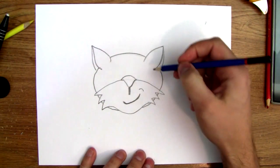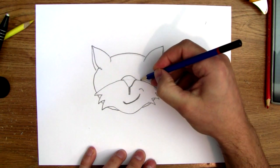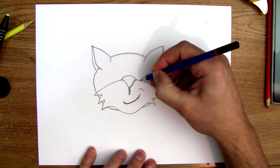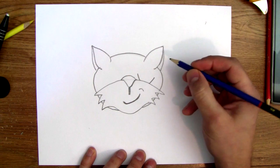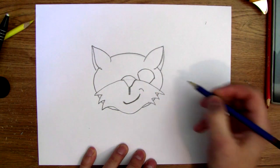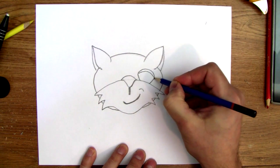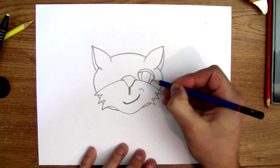All right, so we got this, it's looking pretty good. We need his eyes, and they kind of go out a bit, and they go out, and then they curve like that. And this is going to be like an eyelid at the top.